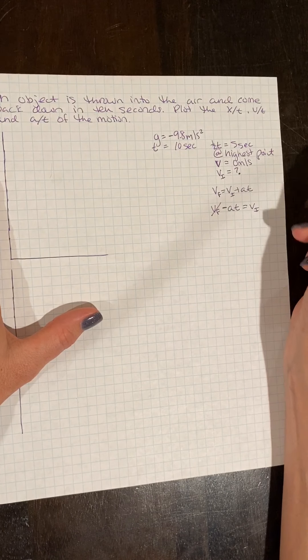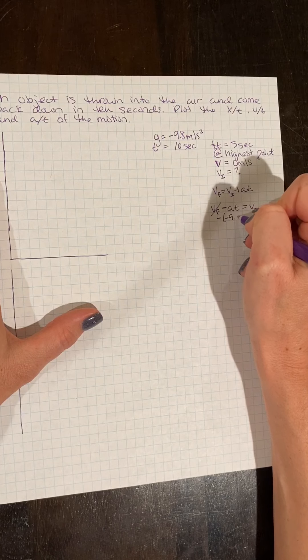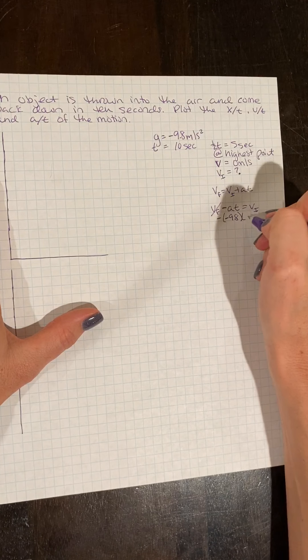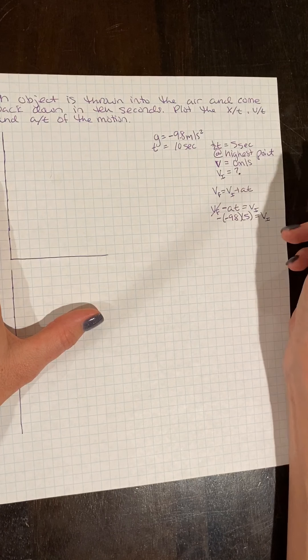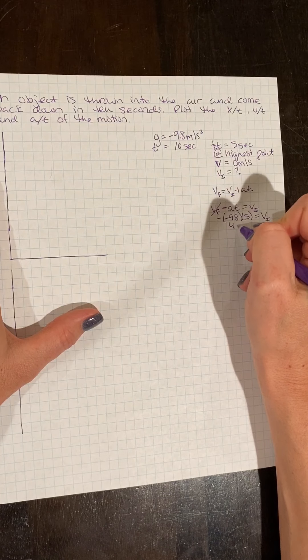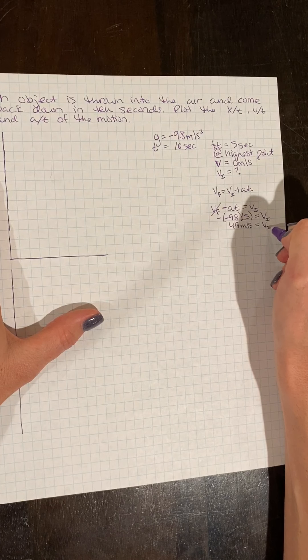My final velocity is zero. My acceleration is negative 9.8. And the time it takes to go up is five seconds, leaving me with an initial velocity of 49 meters per second.